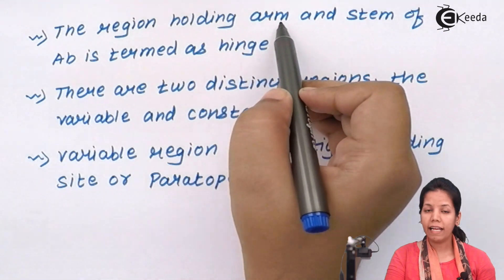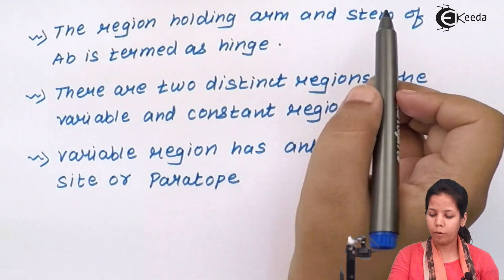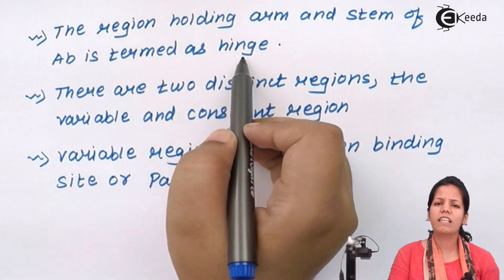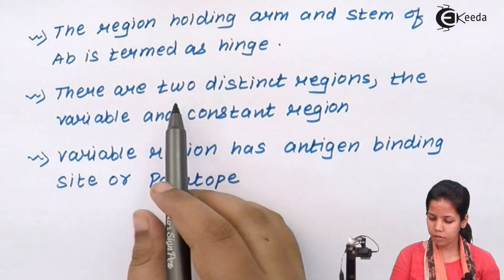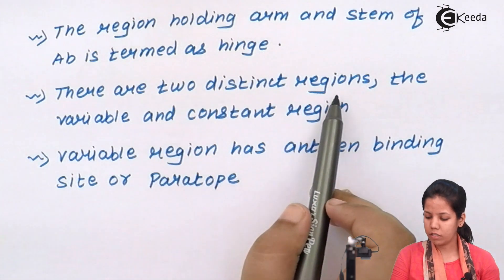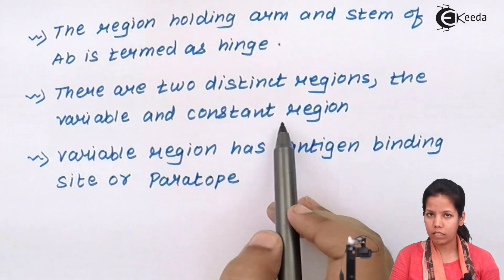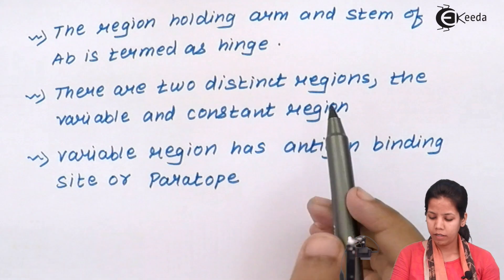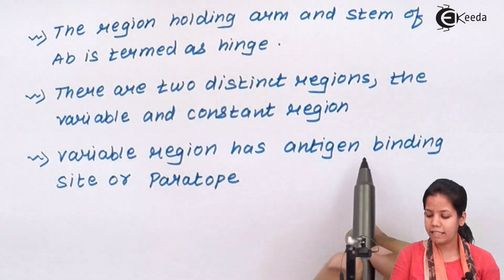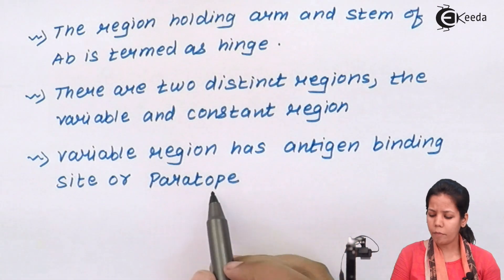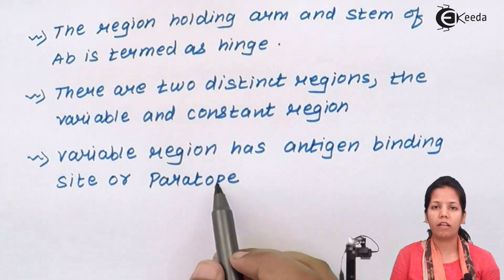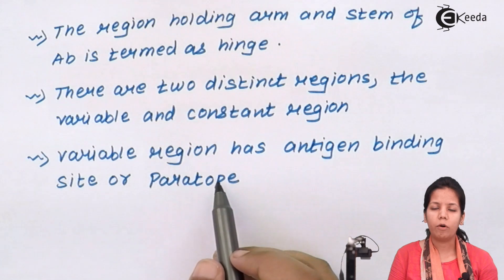The region holding the arm and the stem of the antibody is termed as the hinge region, or you can say the lock-type region. There are two distinct regions in the structure of an antibody: the variable region and the constant region. The variable region has the antigen binding site, also called the paratope — it is the place where your antigen is actually going to attach to the antibody and form the antigen-antibody complex.